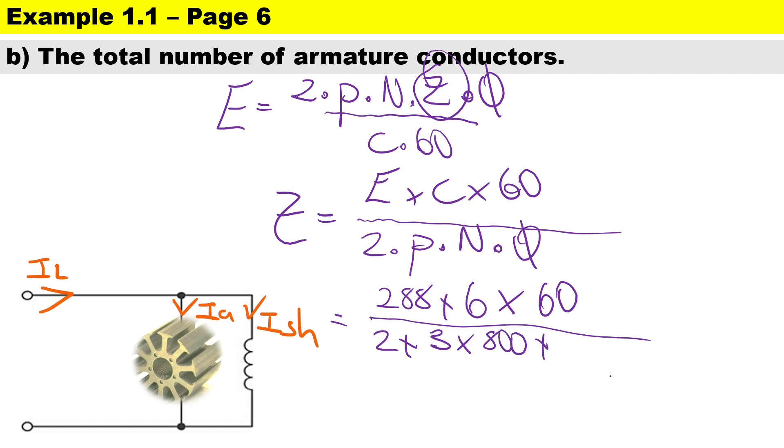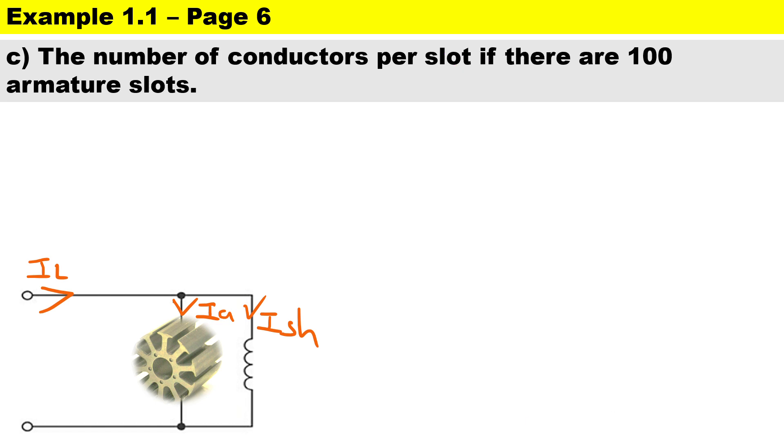And the flux per pole is going to be 35 times 10 to the power of minus 3. Therefore, the total number of armature conductors is 617.143. If you want, just to put some units here, you can call it conductors.